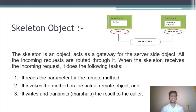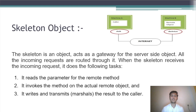Skeleton object: The Skeleton is an object that acts as a gateway for the server side. All incoming requests are routed through it. When the Skeleton receives the incoming request, it does the following tasks: it reads the parameter for the remote method, it invokes the method on the actual remote object, and it writes and transmits the result to the caller.